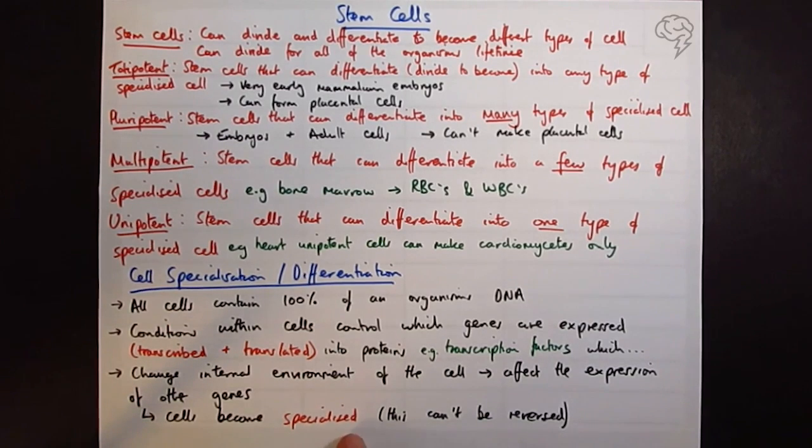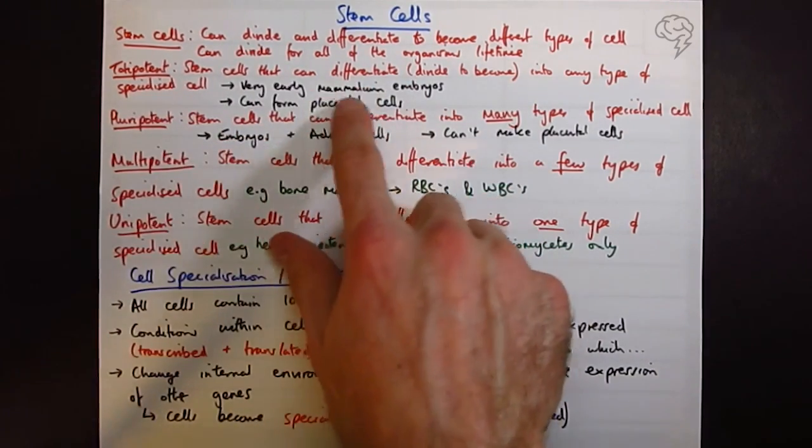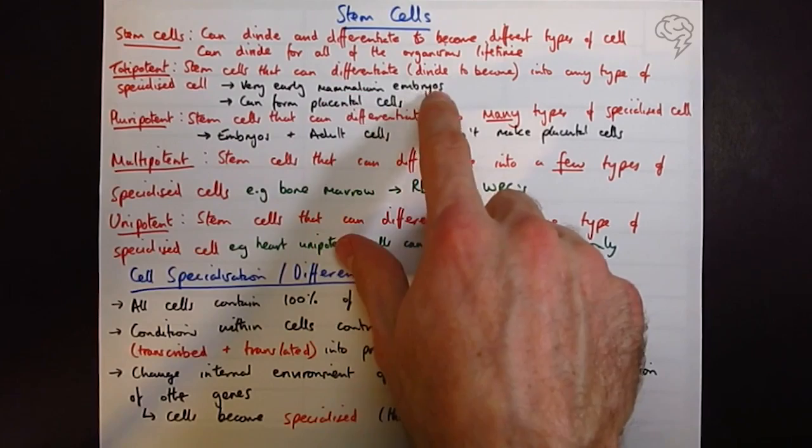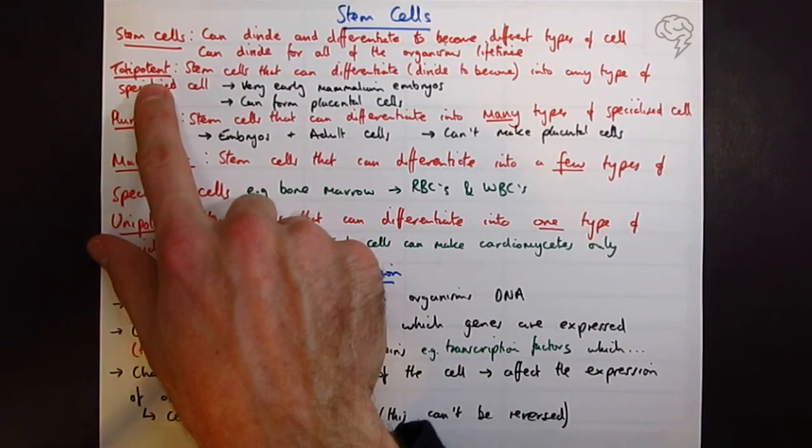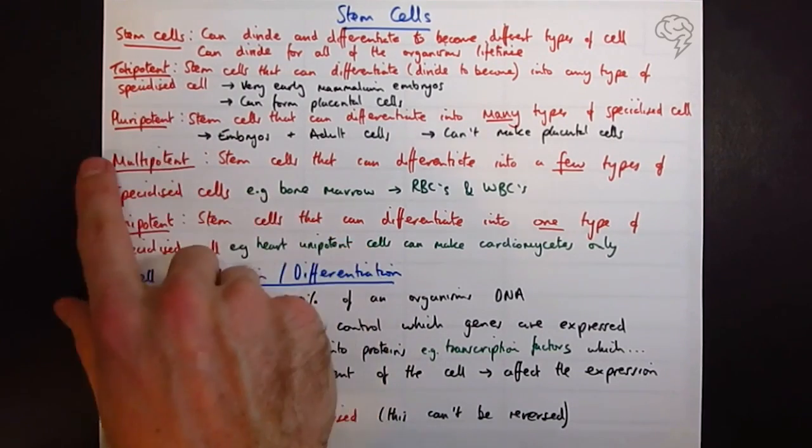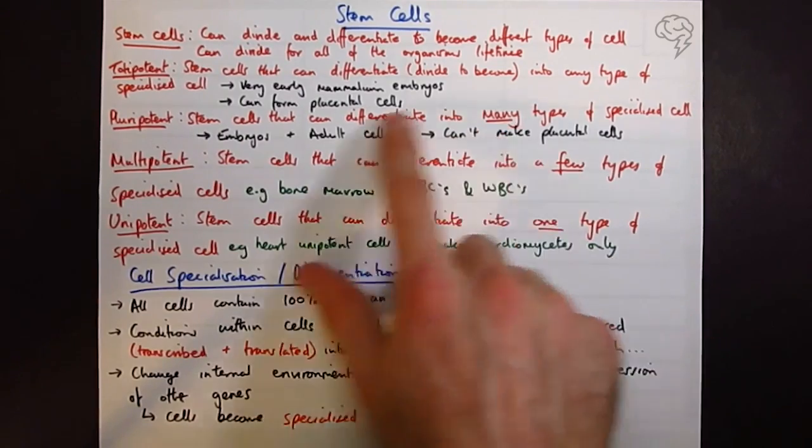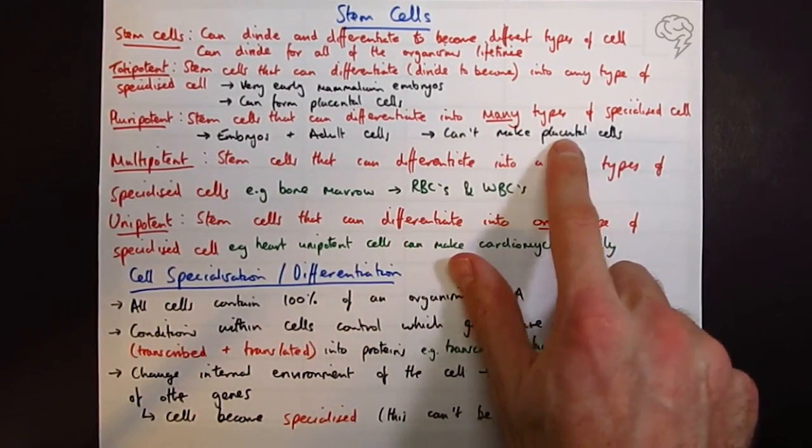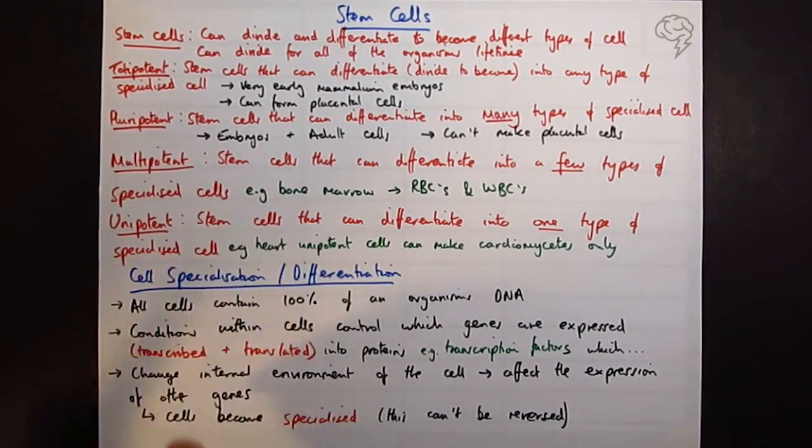And in terms of knowing these key terms, basically totipotent only in the very early stages of embryos. This is why they're a little bit controversial and make headlines, because people make embryos to take out the totipotent stem cells so they can use them to do good stuff with. Pluripotent can make many types of cells but not everything, especially not placental cells. Multipotent, these are in adults, so fully grown adults are going to have these guys.